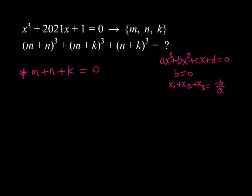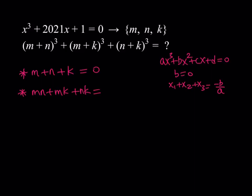The second relationship is going to be the two-way products: mn + mk + nk. That equals c over a. In this case c is the coefficient of x, and since a is 1, this is just going to be 2021.